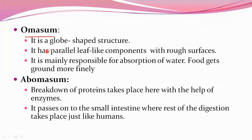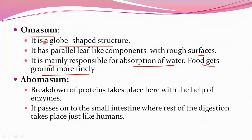The third compartment of the stomach is the omasum. It is a globe-shaped structure with parallel leaf-like components with rough surfaces. The omasum is mainly responsible for absorption of water, and food gets ground more finely here. The fourth compartment is the abomasum, where protein digestion takes place with the help of enzymes. It passes food on to the small intestine where the rest of digestion takes place, similar to humans.